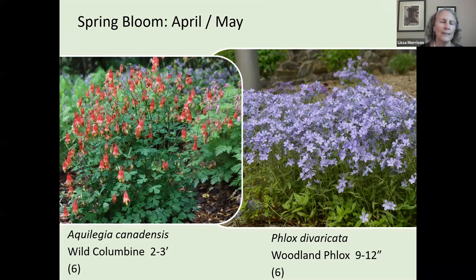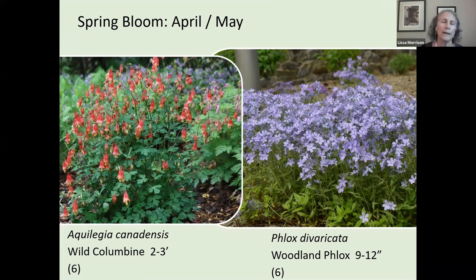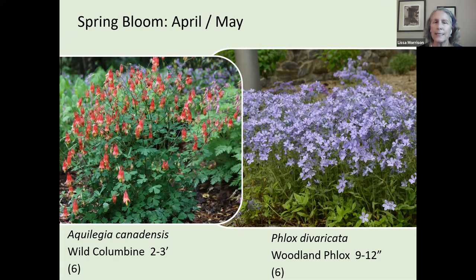Wild columbine is a great perennial that comes back every year. It does move around and reseed, but it is very manageable — easy to weed out if it gets too dense or reseeds where you don't want it. It needs good drainage and doesn't grow in wet, heavy soil. It's a beautiful, showy plant that also feeds hummingbirds.